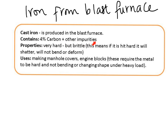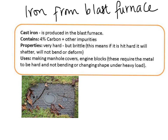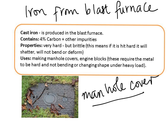Cast iron contains 4% carbon and other impurities. It is very hard but brittle — it shatters but will not bend or deform, so it lacks the malleability we discussed. It is useful for making manhole covers and engine blocks. These applications require metal to be hard and not bend or change shape under heavy load. A manhole cover, for example, should not bend or buckle when a heavy vehicle passes over it, though it can shatter if struck very hard.